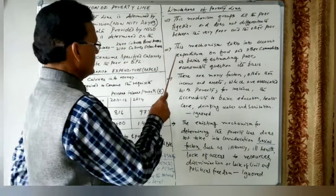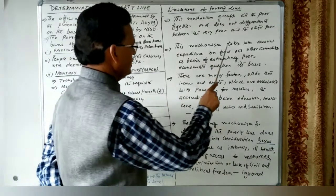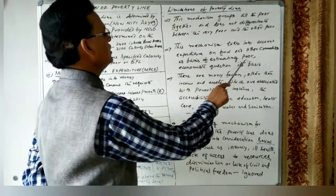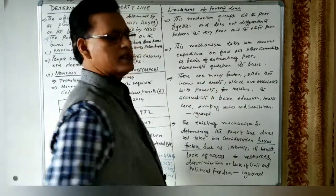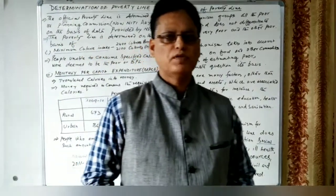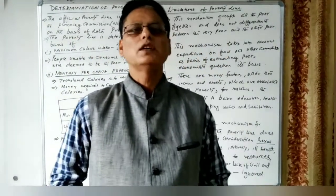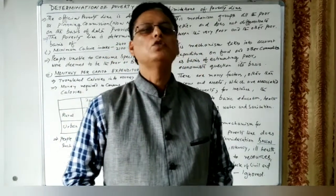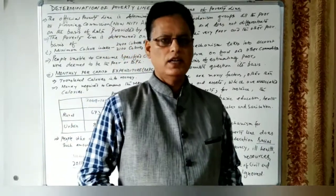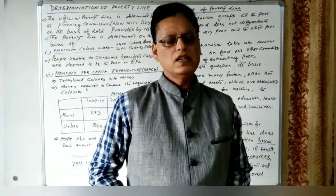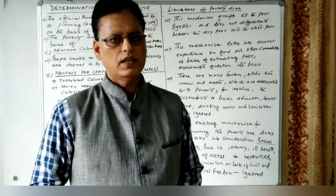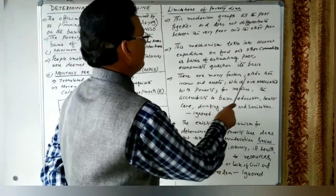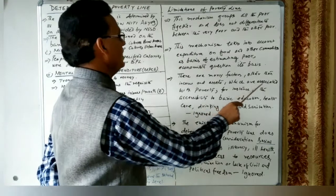The second limitation is that this mechanism takes into account only expenditure on food and other commodities as the basis for estimating poverty. Other factors related to poverty are not considered, and this is why the method has been criticized by some economists.